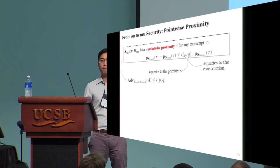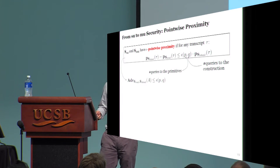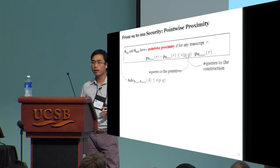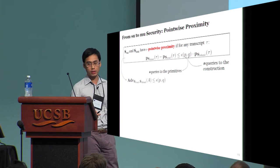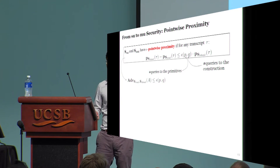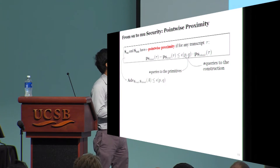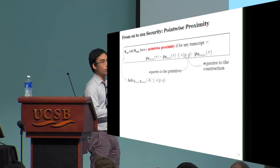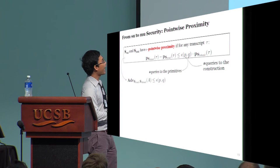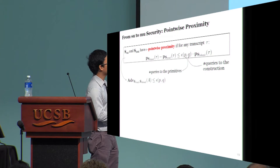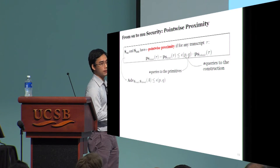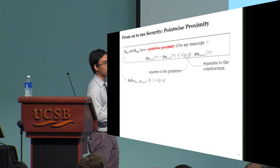Now, let's move on to the multi-user setting. We'll give a generic translation from single to multi-user security. The translation is conditional, and we call the condition pointwise proximity. Specifically, epsilon pointwise proximity means that for any good transcript, the gap between the probability that the ideal system produces this transcript, and the probability that the real system produces it, must be smaller than epsilon times the ideal probability.